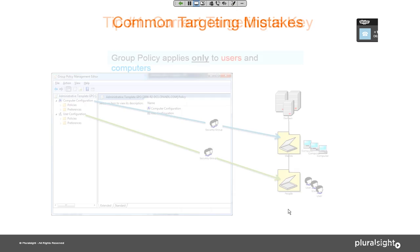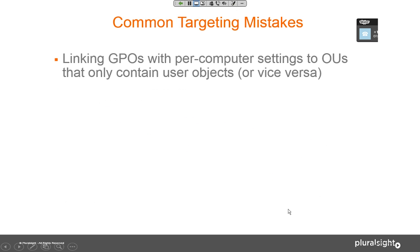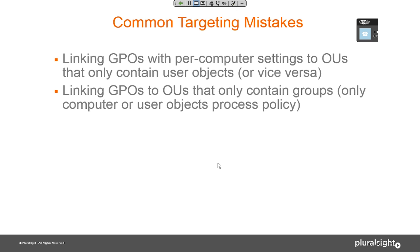Some common targeting mistakes: linking GPOs with per-computer settings to OUs that only contain user objects, or vice versa — this is a classic beginner mistake. Linking GPOs to OUs that only contain groups is also a mistake; computer or user objects are what matter.